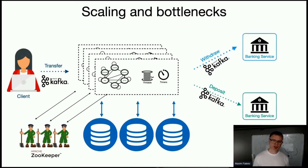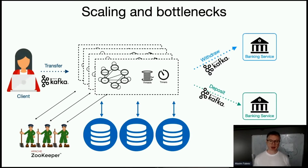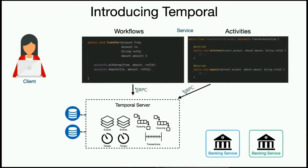On top of that, you have to deal with race conditions. There's no transaction between Kafka and the database. If you write your application using both directly, you'll have race conditions: you can put a message in Kafka and the database transaction fails, or you update the database and then fail to enqueue the Kafka message — losing messages. Applications still commonly suffer from these race conditions.